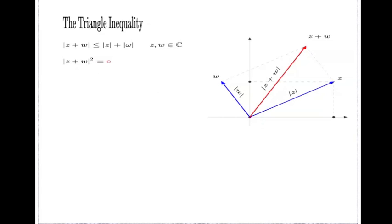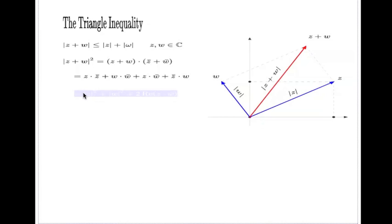We start with the left-hand side, but we square it, because it's always easier to manipulate with the square of the absolute value. We use the identity which says that the absolute value squared of a complex number equals the number times its conjugate. The next natural step is to expand this product: z times z̄, then w times w̄, and then the mixed products z times w̄ and z̄ times w.